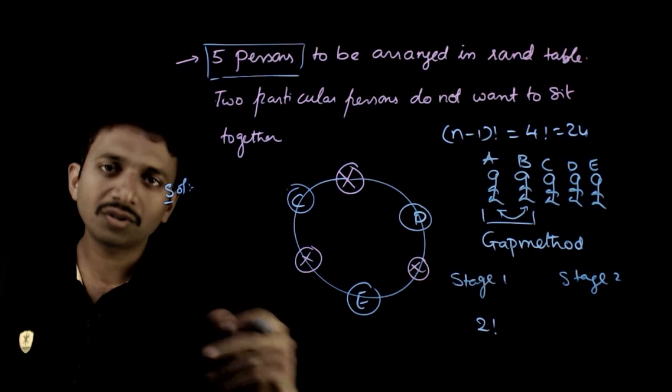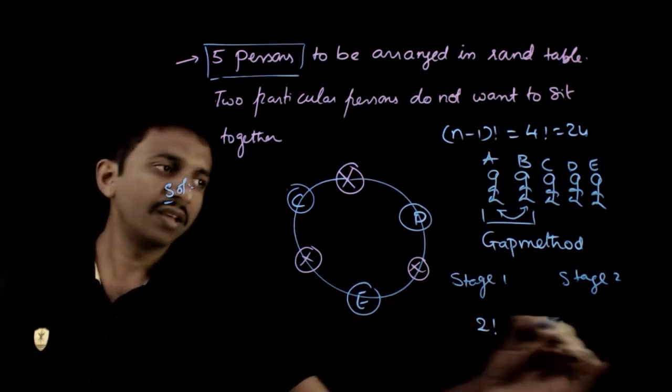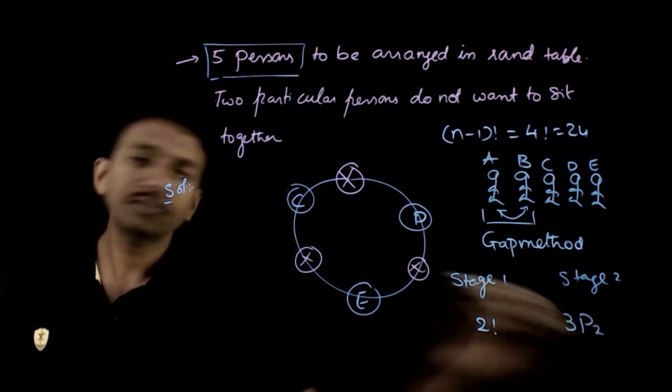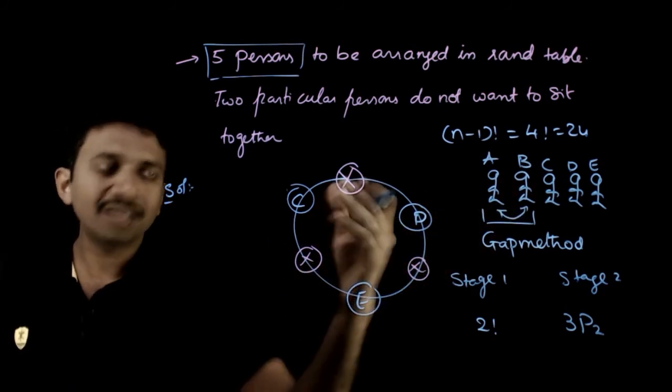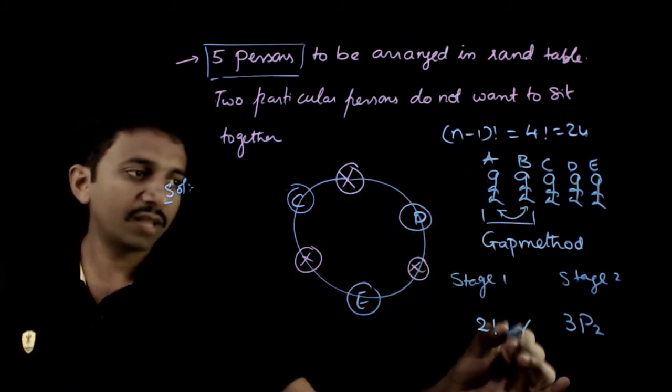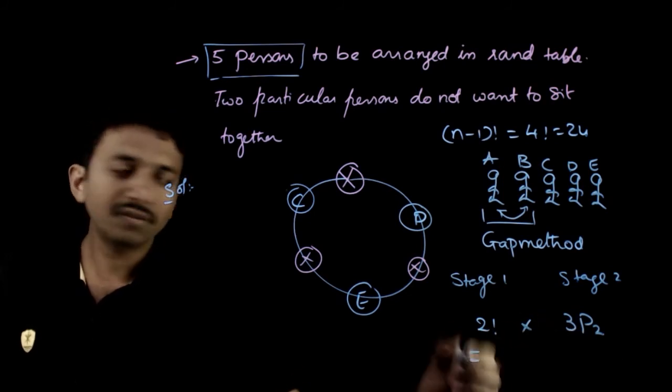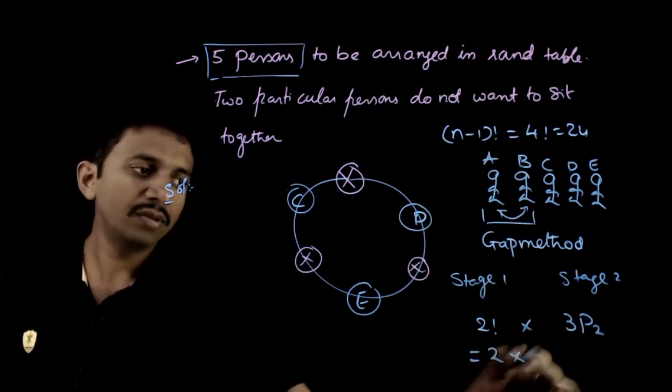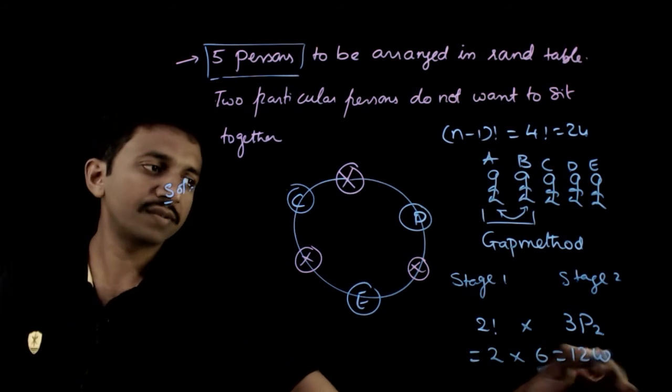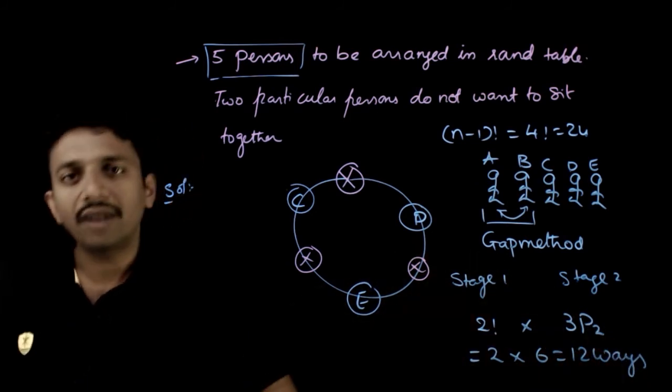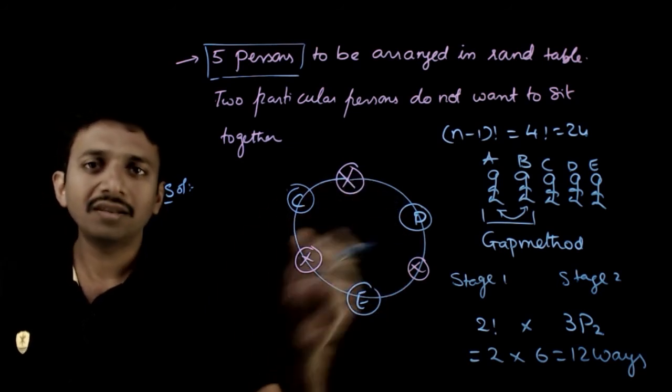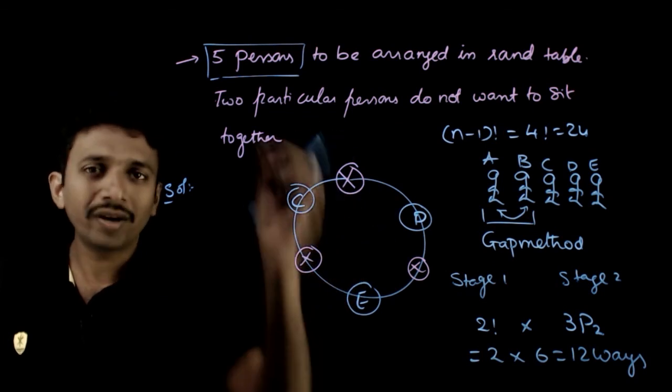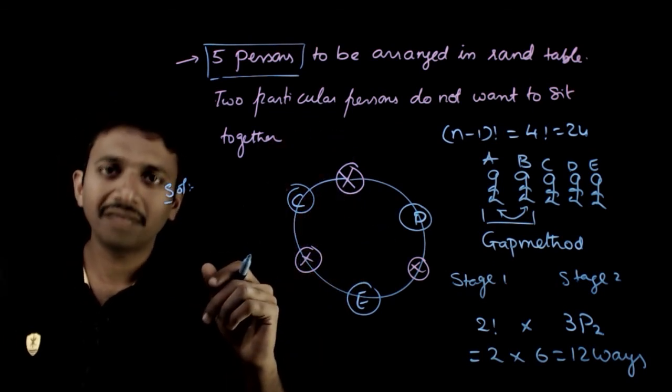So in three places, two students can be arranged in how many ways? 3P2. Now C, D, E also need to be arranged, and after that the two in the gaps - that means multiply. So that equals 2 times 6, which equals 12 ways. You have 12 different ways in which you can make five people sit in a round table such that no two particular persons are together. Thank you.